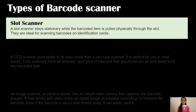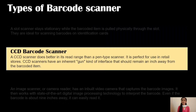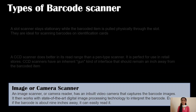The next type is the CCD barcode scanner. A CCD scanner does better in its read range than a pen type scanner. It is perfect for use in retail stores. CCD scanners have a gun-type interface that should remain an inch away from the barcoded item. The last type is the image or camera scanner. An image scanner or camera reader has an inbuilt video camera that captures the barcoded images. It then works with digital image processing technology to interpret the barcode, and can easily read it even if the barcode is about nine inches away.